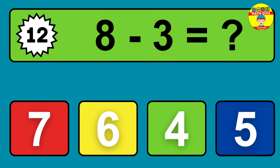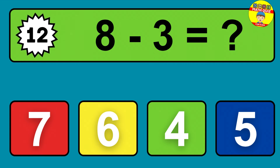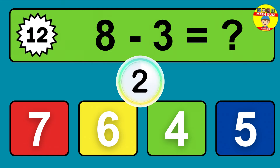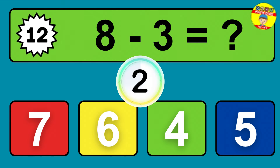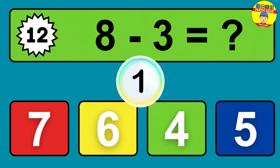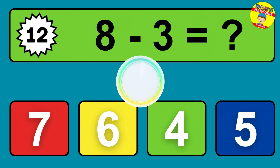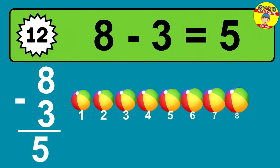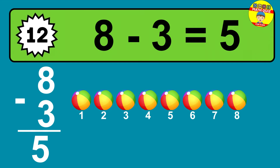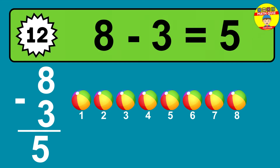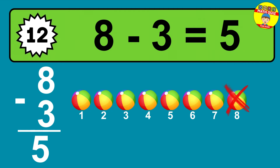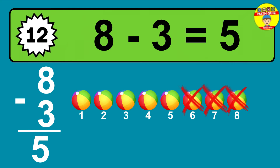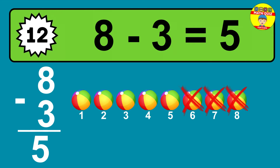Question twelve: eight minus three equals what? The answer is eight minus three is five. Let's count it: one, two, three, four, five.